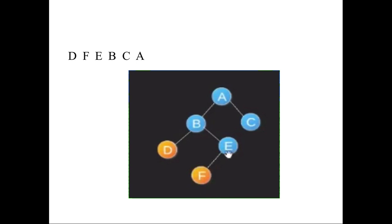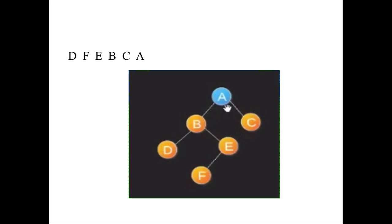Once F is visited, you have to visit the right child of E. But E doesn't have any right child, so you have to visit the root node E. Once you visit the root node E, the left and right child of B has been visited, then you have to mark B as visited. Once B has been visited, the total left side of the A node has been visited. So you have to visit the right child of A, which is C. So C will be visited next. Once C is visited, the left child of A is visited and right child of A is visited. So next you have to visit the root A. A will be visited next.